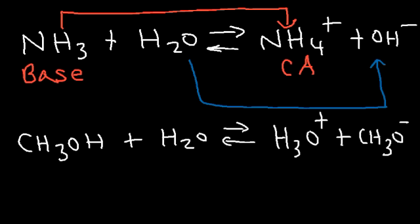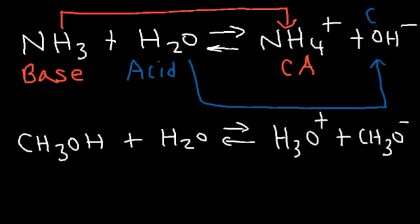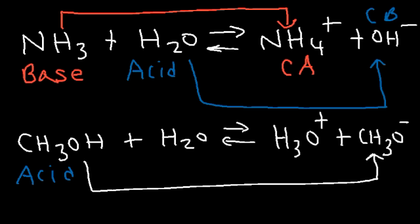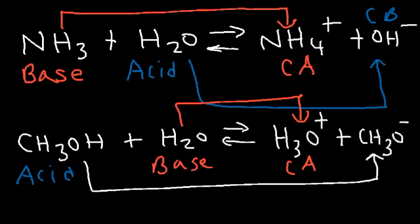Water lost a hydrogen ion, making it the proton donor — the Brønsted-Lowry acid — and hydroxide, which lost a hydrogen going from H2O to OH⁻, is the conjugate base. In the second reaction, methanol lost a hydrogen so it's the proton donor — the Brønsted-Lowry acid. Water gained a hydrogen so it's the Brønsted-Lowry base, H3O⁺ is the conjugate acid, and methoxide is the conjugate base.